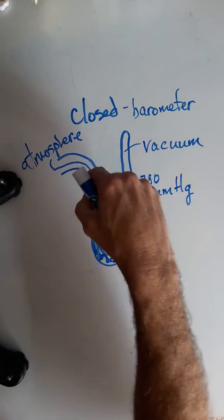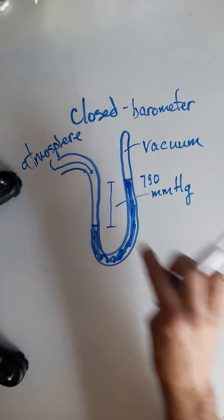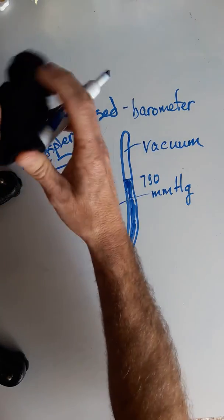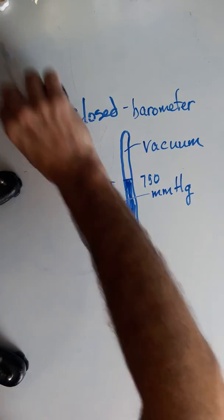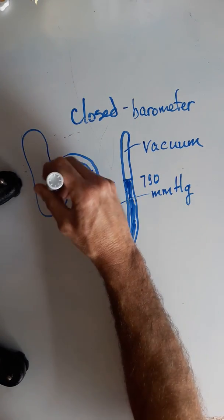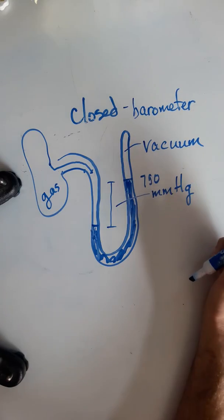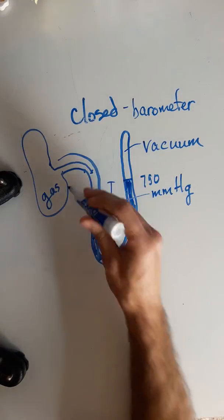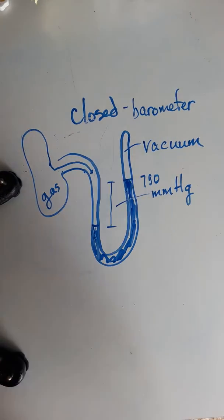You can also have this attached instead to the atmosphere to a bulb, gas chamber, whatever, this would be some kind of gas in here, which would work the same way, measuring that distance, giving you the pressure of the gas.